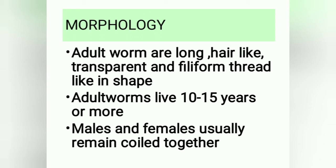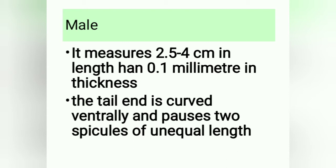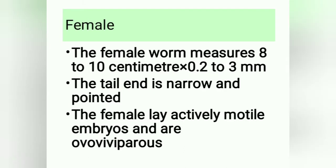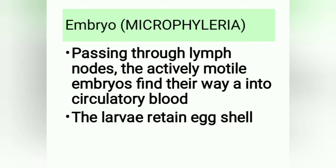Adult worms live 10 to 15 years or more; males and females usually remain coiled together. Male: measures 2.5 to 4 cm in length and 0.1 mm in thickness; the tail end is curved ventrally and possesses two spicules of unequal length. Female: measures 8 to 10 cm by 0.2 to 0.3 mm; the tail end is narrow and pointed. The female lays actively motile embryos and is ovoviviparous.